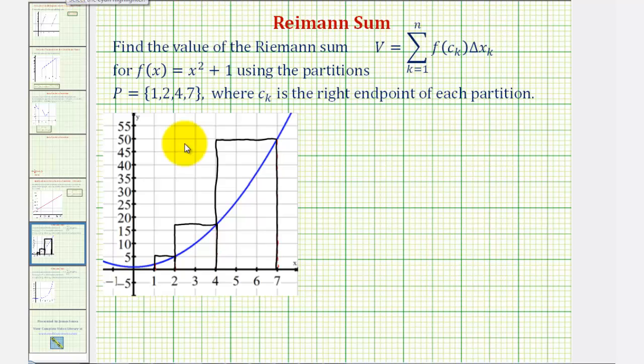Because our function is non-negative, this Riemann sum will be the sum of the three areas of the three rectangles. If the function did drop below the x-axis, we may have a rectangle that's partially below the x-axis, and therefore the value may be negative. Let's go ahead and set this up using function notation, and then we'll find the value.